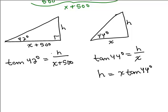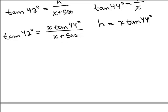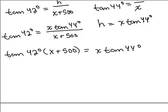So in place of H over here, I could put in X tangent of 44 degrees over X plus 500. And you've got to be really careful with your algebra here. So the first thing I'm going to do is multiply both sides by X plus 500. So I've got tangent of 42 degrees times X plus 500, and when I multiply it on the right-hand side, I'm just going to have X times the tangent of 44 degrees.